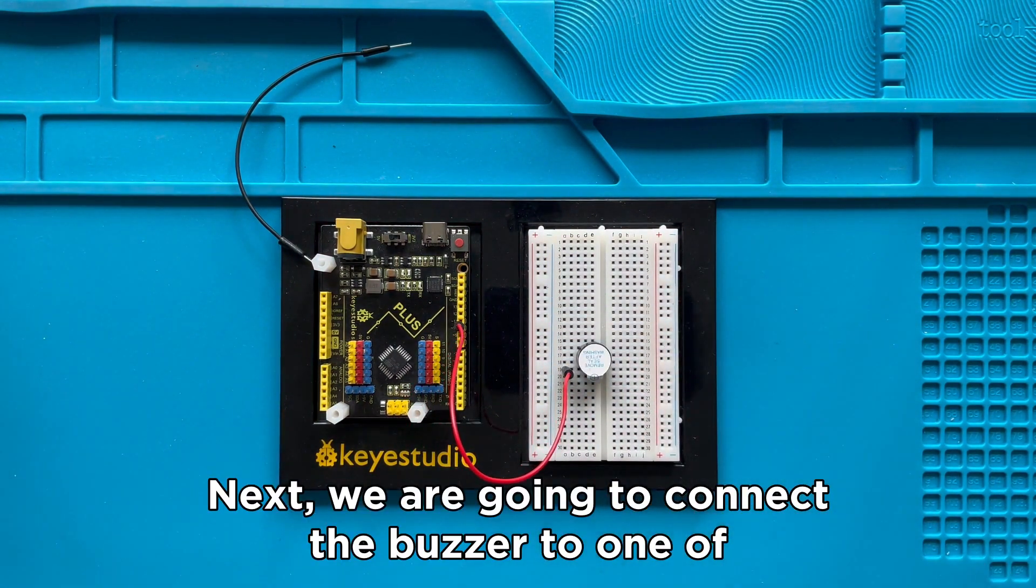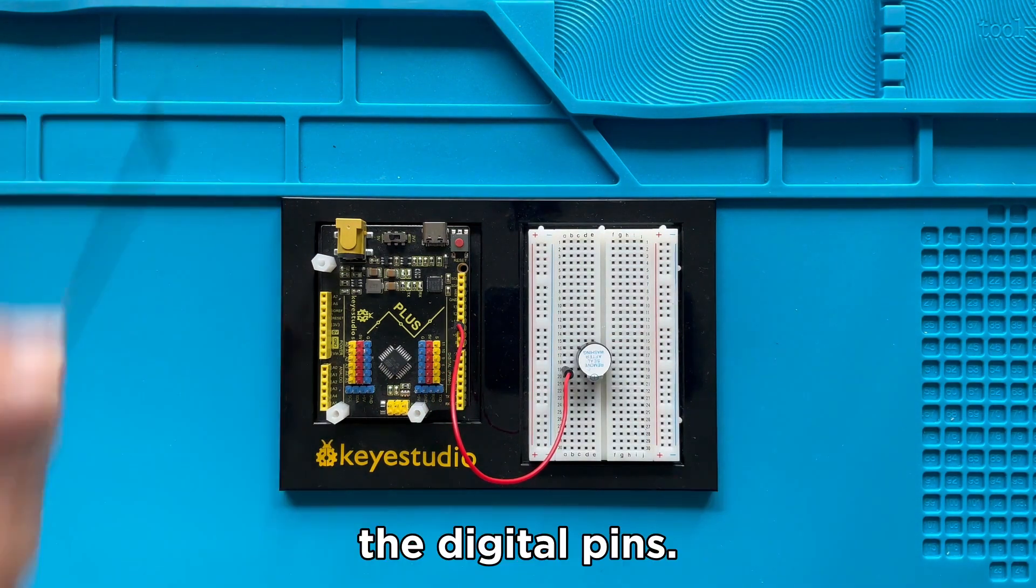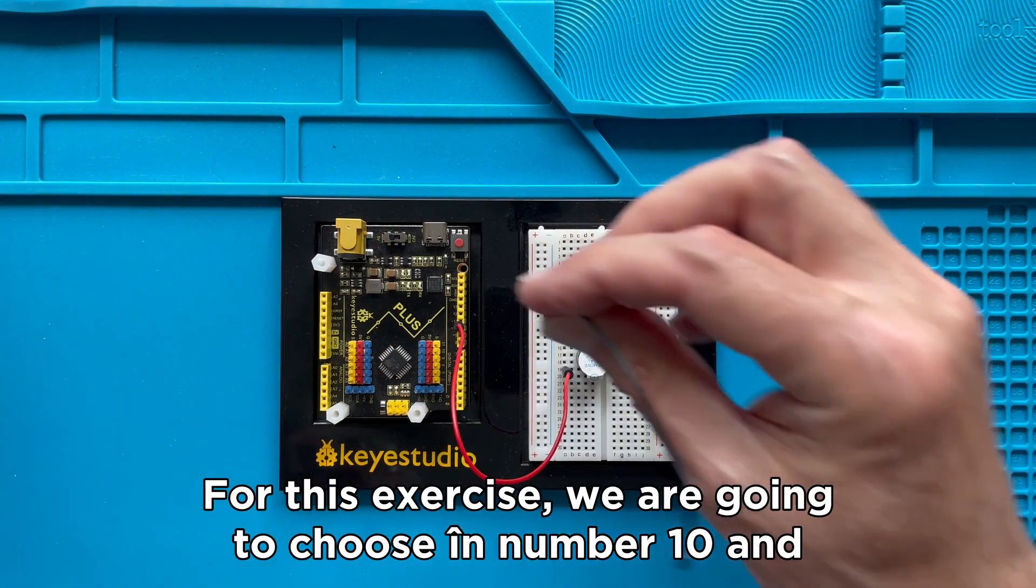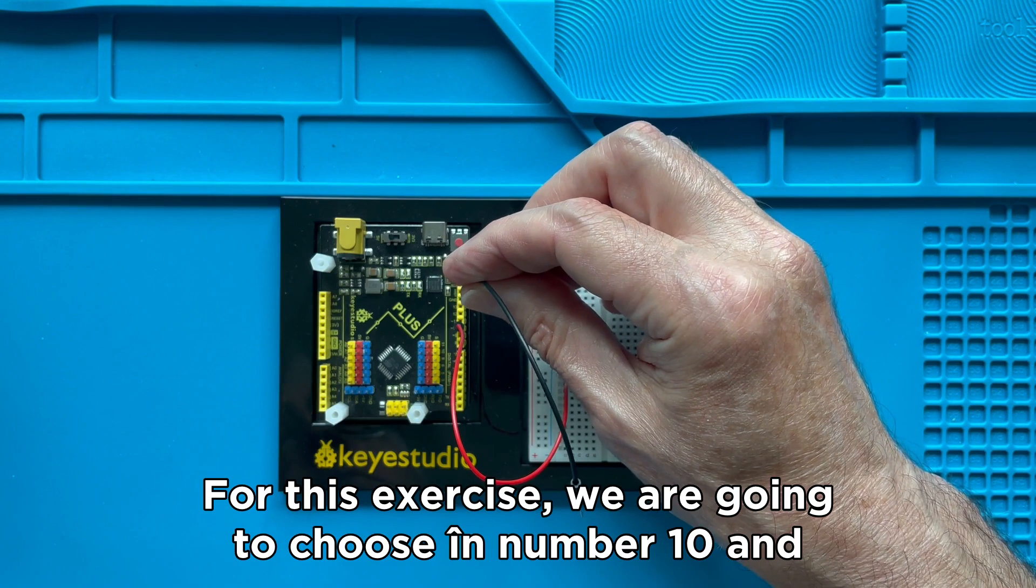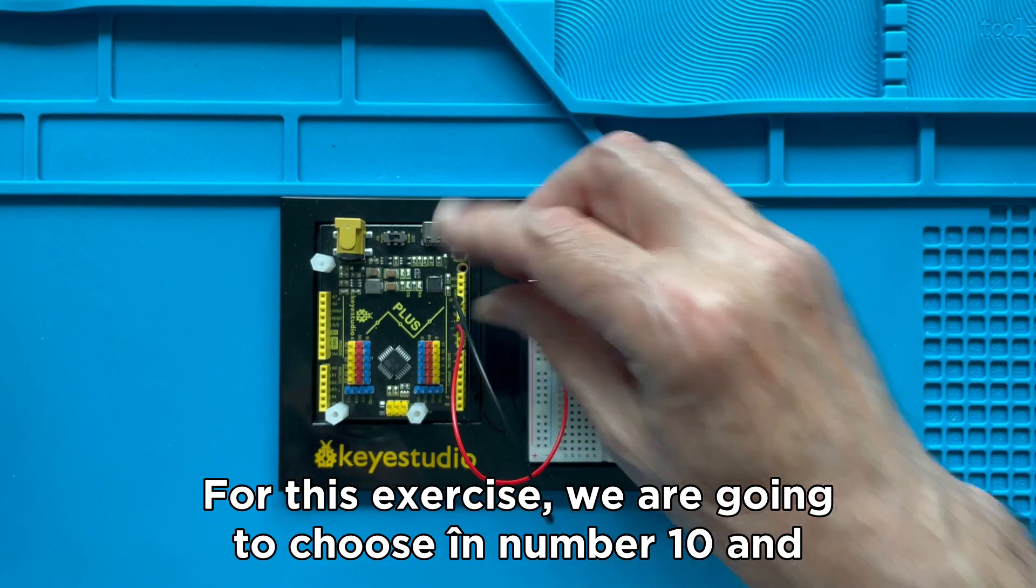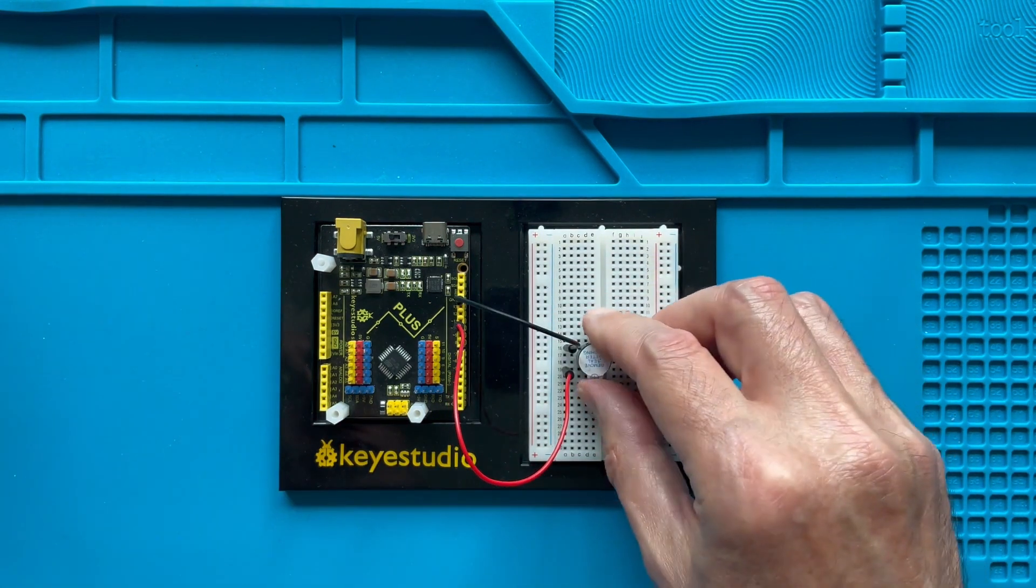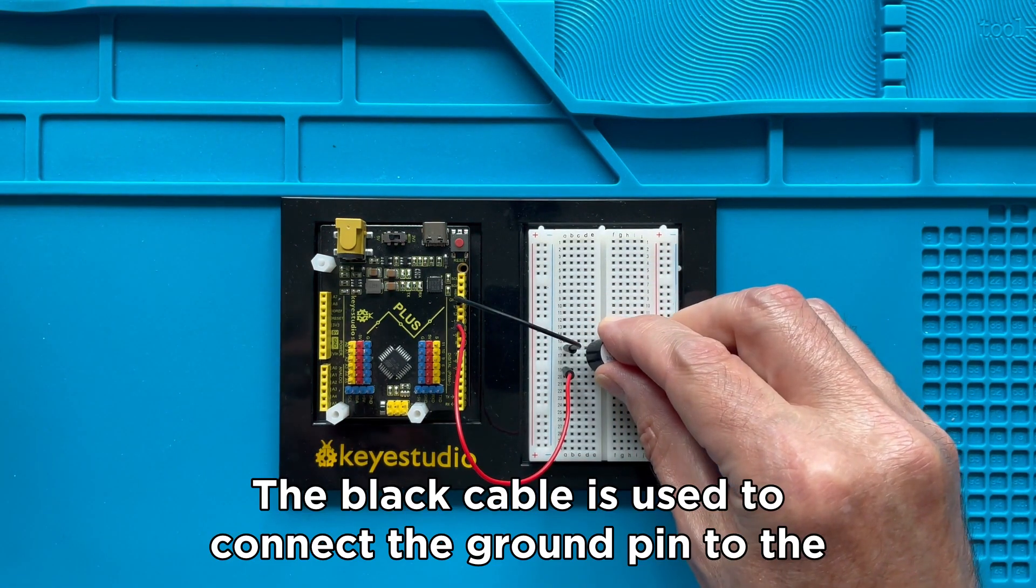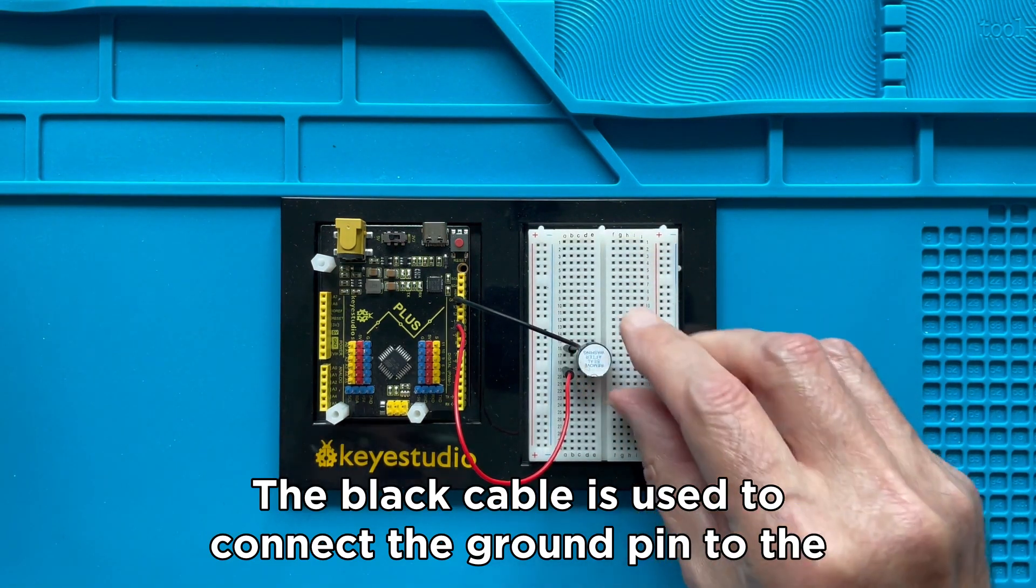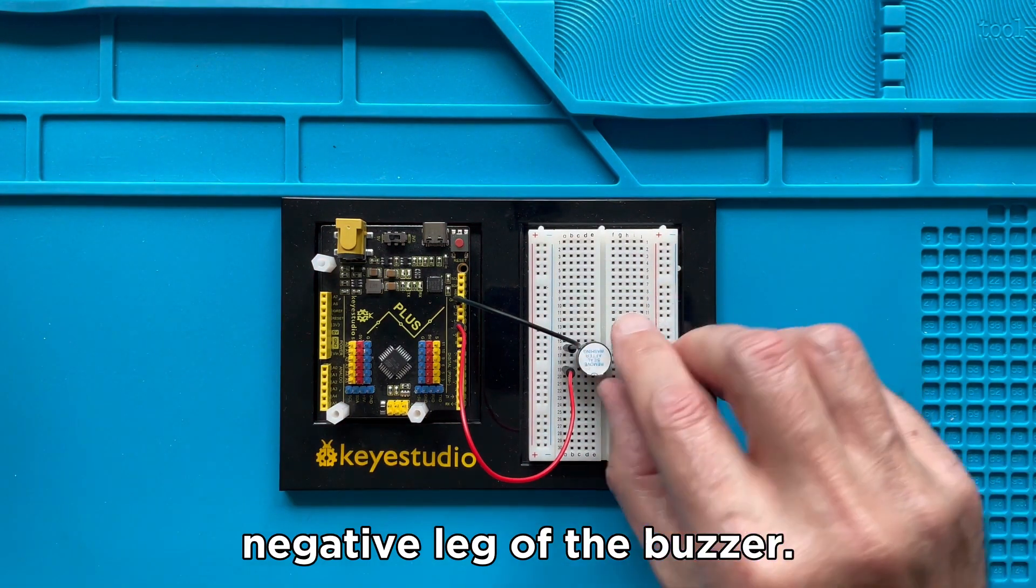Next, we are going to connect the buzzer to one of the digital pins. For this exercise, we are going to choose pin number 10 and connect the red cable to the positive side of the buzzer. The black cable is used to connect the ground pin to the negative leg of the buzzer.